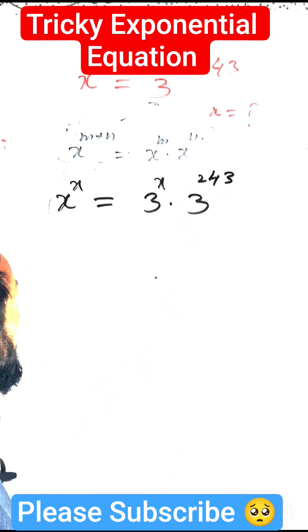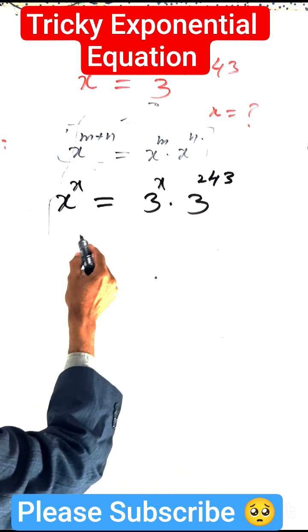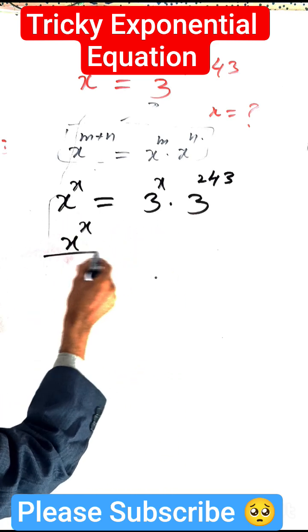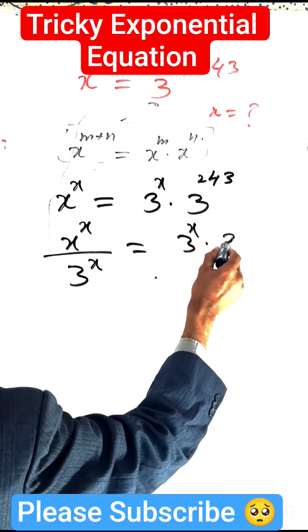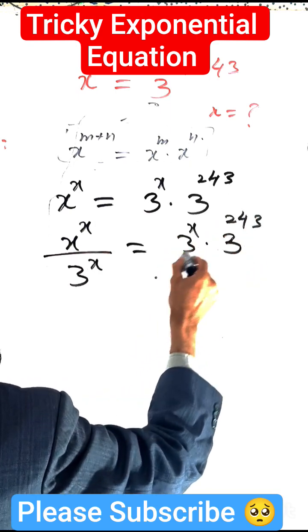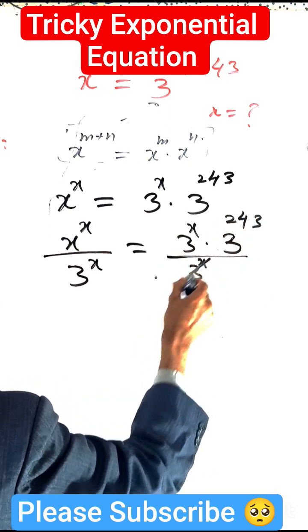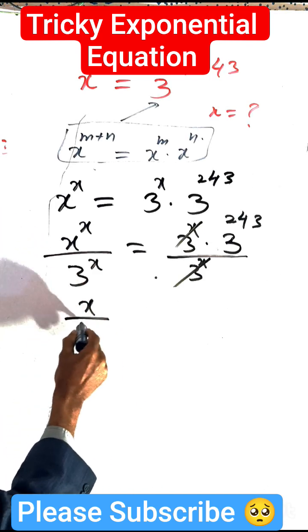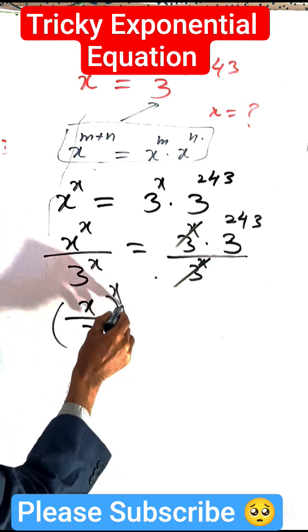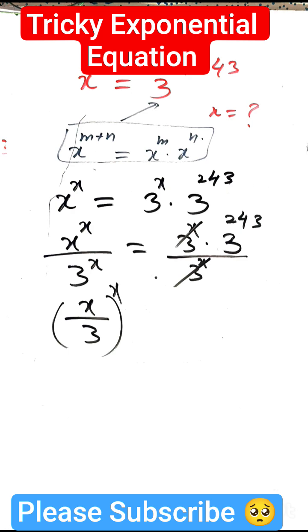Now dividing both sides by 3 exponent of x. Both are cancelled, so we get x divided by 3 whole exponent of x, because the powers are the same. This equals 3 exponent of 243.